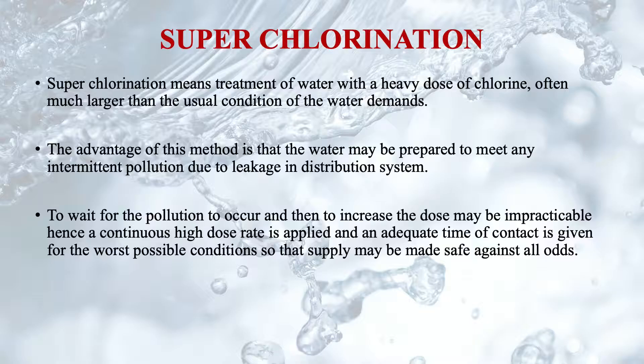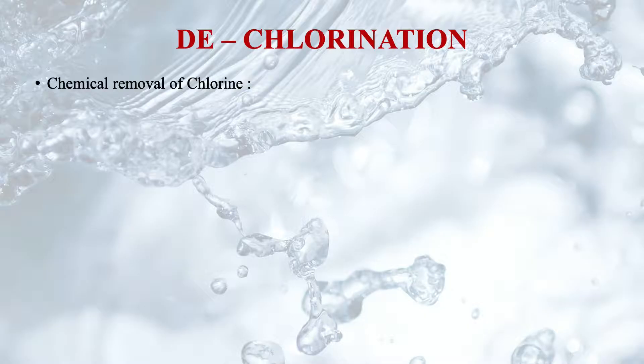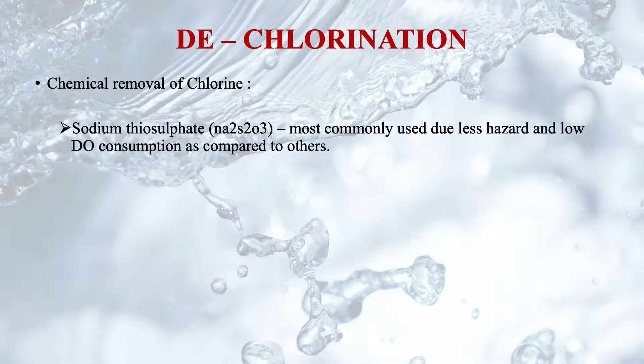Another form of chlorination is superchlorination, which involves treatment of water with a heavy dose of chlorine — often much larger than the usual condition of the water demands. The advantage of this method is that water may be prepared to meet any intermittent pollution due to leakage in the distribution system. A continuous high dose is applied and adequate contact time is given for the worst possible conditions, so that supply may be made safe against all odds. Superchlorination is usually carried out when the possibility of spread of waterborne disease is large.